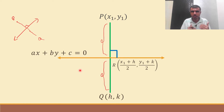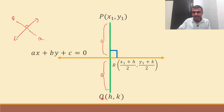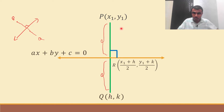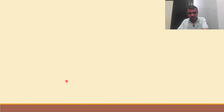This line segment PQ and this line are perpendicular — 90 degrees — because Q is the image of P. So the two conditions I'm going to use are: first, line segment PQ is perpendicular to this line, meaning slope of PQ multiplied by slope of the line equals minus one.